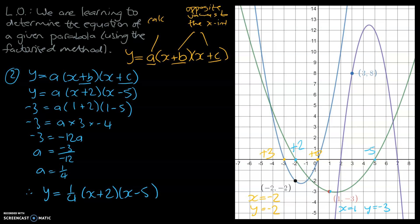Therefore, y equals one quarter times (x plus 2)(x minus 5). So we've done 2 out of 3 of our graphs. If you haven't got that example down, make sure you do — then we're going to get into our last and hardest graph, the purple one.